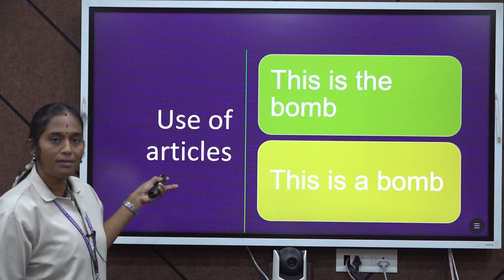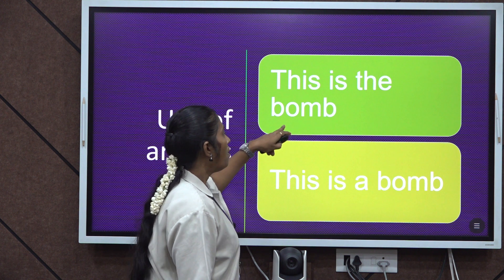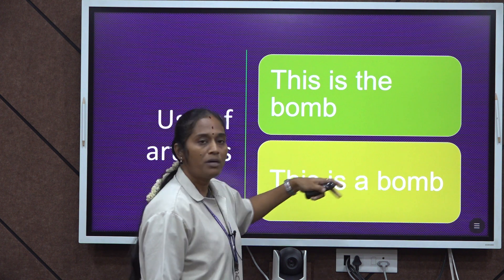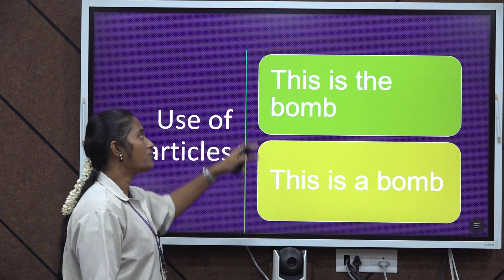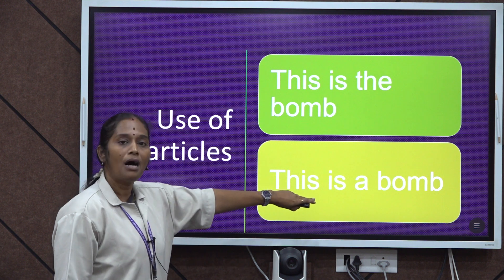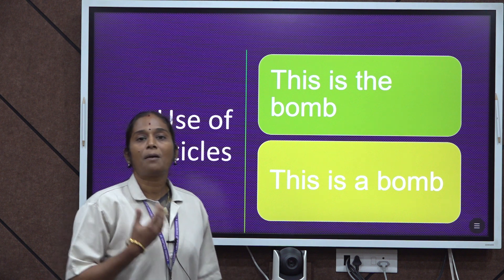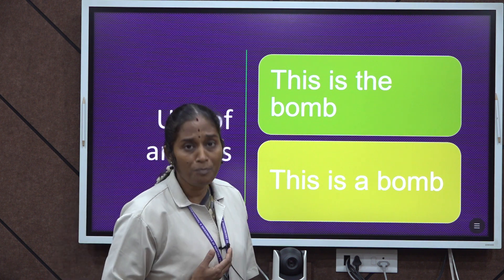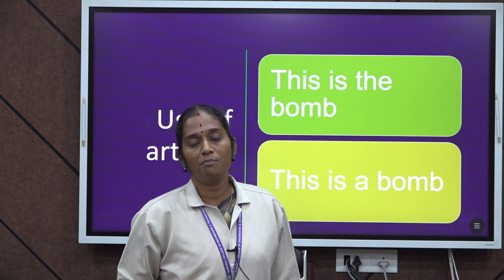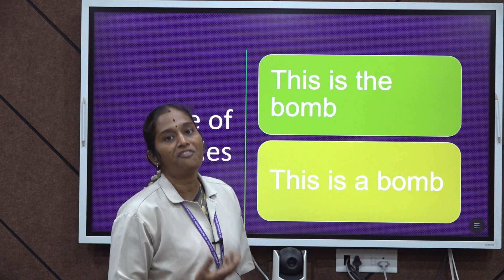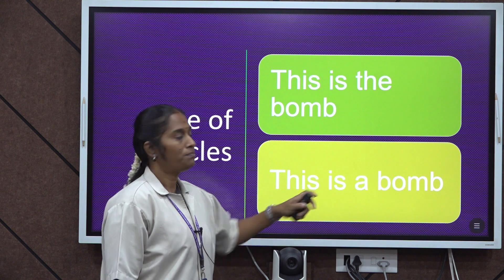Now, usage of articles: 'This is the bomb' versus 'This is a bomb' — which is correct? 'This is a bomb' is correct. If you say 'this is the bomb,' it implies surprise at seeing it, but no one would be surprised — everyone would be afraid. So the correct answer is 'This is a bomb.'